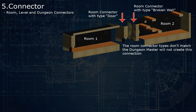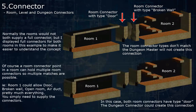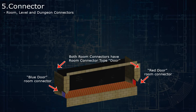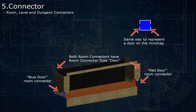If the connector type is the same for both connectors, then the Dungeon Master knows that these connectors will actually fit together when they are spawned. The connector type is also used to display elements on the map. So, for example, if a room has a blue door connector and a red door connector, both of these door connectors would be associated with the door connector type, and the door connector type could display a door icon on the map.